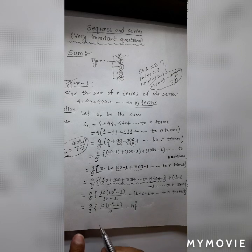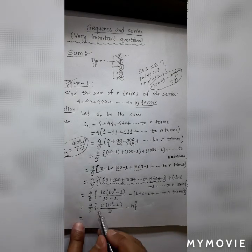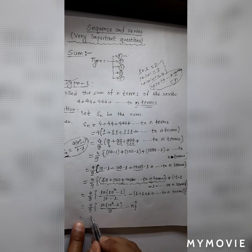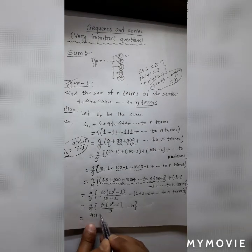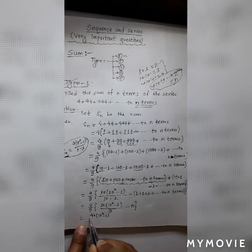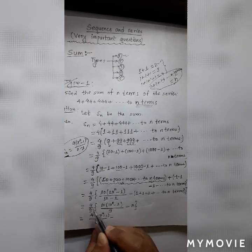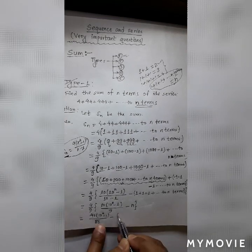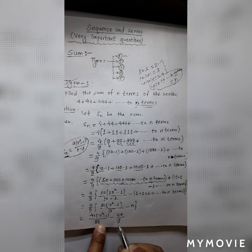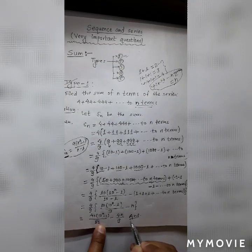Opening the bracket gives the final answer: 40 times (10^n minus 1) divided by 81, minus 4n by 9. This is our answer for Type 1.